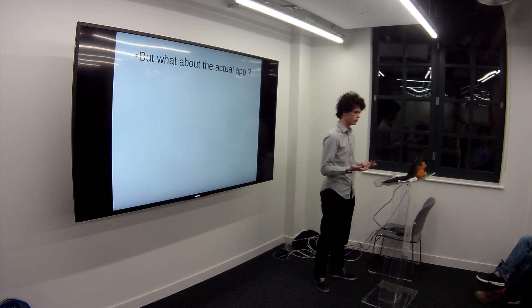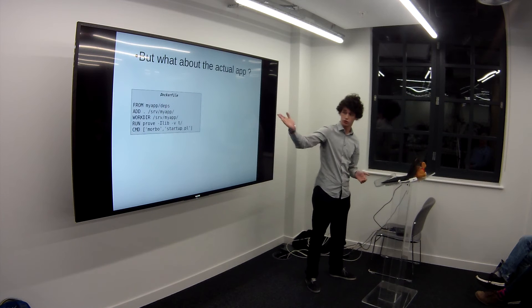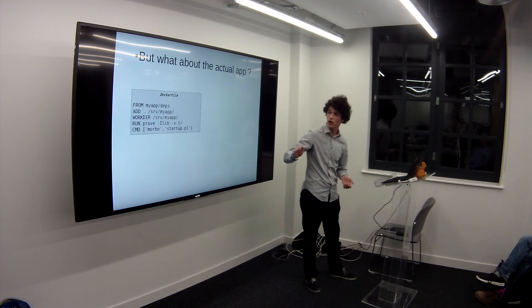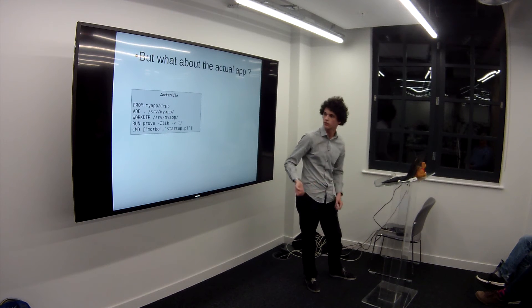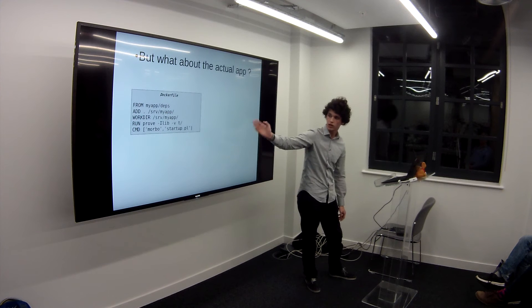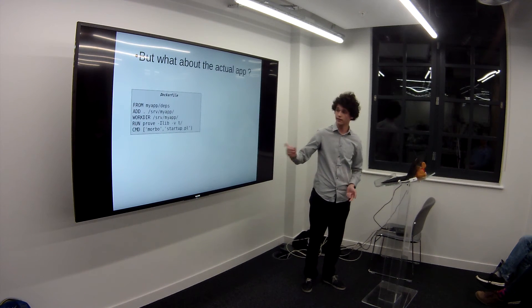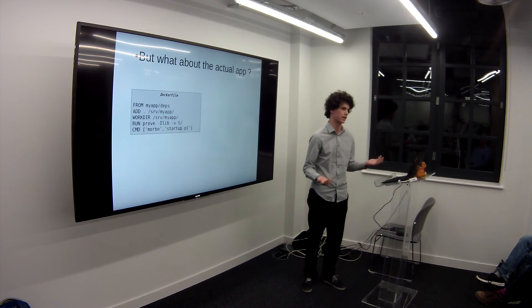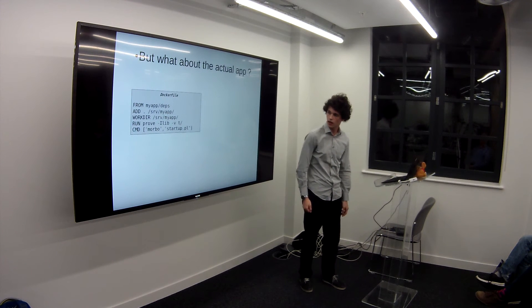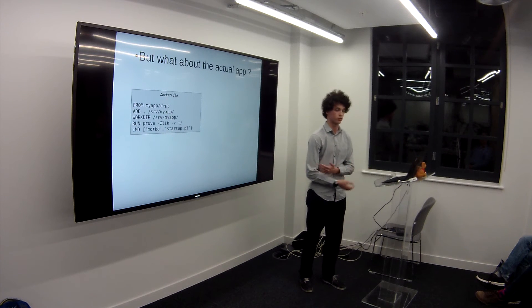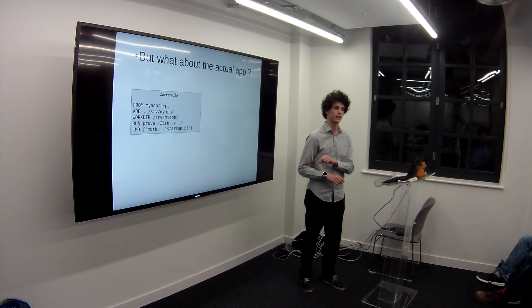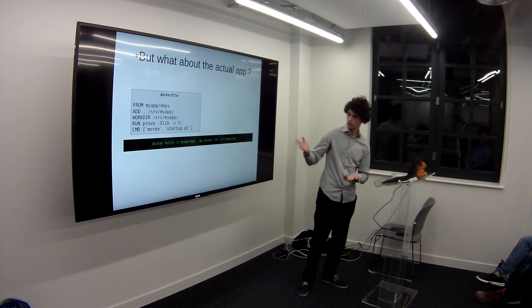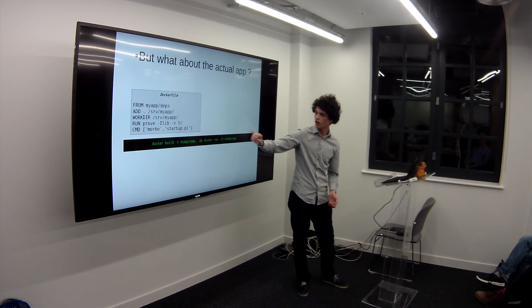But what about the actual app? It's easy. You use your newly built image as the base image, you add the whole repo — that could be optimized because obviously you also add the Dockerfile, which you don't really need. You change the working directory, put it in /myapp. Then you run the tests. I like to do that because if your tests run correctly when you build your image, then that image is ready to be used. Then CMD — whatever you use to start your Perl app. In this case I use Morbo as an example, but that can be anything. You can specify the command at runtime when you run your container, but using CMD makes the run command much shorter.